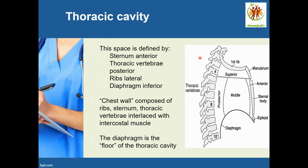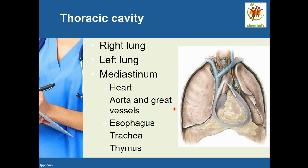Let's see about the thoracic cavity. This space is defined by the sternum anteriorly, thoracic vertebrae posteriorly, ribs laterally, and the diaphragm at the base. The chest wall is composed of ribs, sternum, thoracic vertebrae, and intercostal muscles. The diaphragm is the floor of the thoracic cavity, which consists of lungs — right and left — and the mediastinum, which consists of the heart, aorta, and great blood vessels, esophagus, trachea, and thymus.